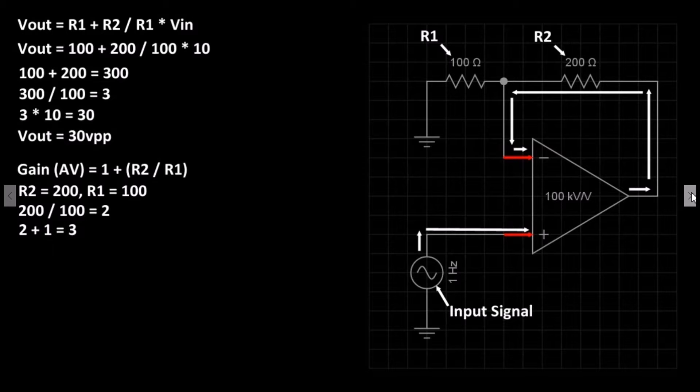This amplifier has a gain of 3, or the output signal is 3 times greater than the input. Let's go to the simulator to see the non-inverting amplifier in action.